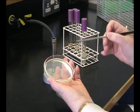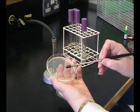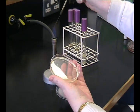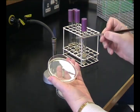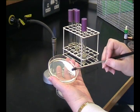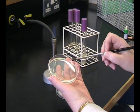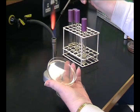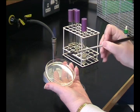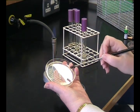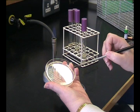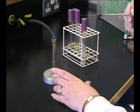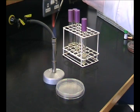You then streak this out onto the plate as before, making your primary streak and then flaming your loop. Rotate the plate, cool your loop, take one streak from the primary streak across the plate. Remember to flame when you rotate the plate. Continue streaking across in order to dilute your bacteria. Always flame your loop at the end.